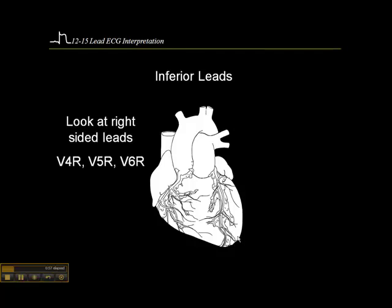If a patient has an inferior wall infarct, you'll recall that the gold standard is to look at the right-side precordial leads because the RCA feeds the right ventricle. So we need to see if there's evidence of an RV infarct with ST elevation in V4R, V5R, or V6R.